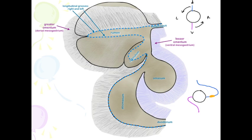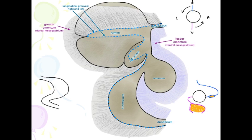The spleen is going to develop in the dorsal mesogastrium and the liver is going to develop in that ventral mesogastrium. As that liver expands, it's going to obliterate that portion of the dorsal mesogastrium between it and the body wall. The remaining portion becomes the lesser omentum. The dorsal mesogastrium is what becomes the greater omentum.